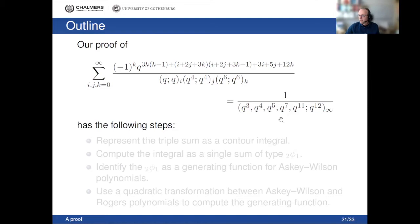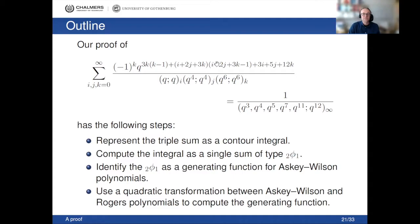There are four steps in the proof. First, represent the triple sum as a contour integral. Second, compute this as a single sum of type ₂φ₁ (a basic hypergeometric series). Third, identify this ₂φ₁ as a generating function for Askey-Wilson polynomials using a quadratic transformation relating Askey-Wilson and Rogers polynomials. Fourth, use that to compute the generating function and thereby evaluate the triple series.